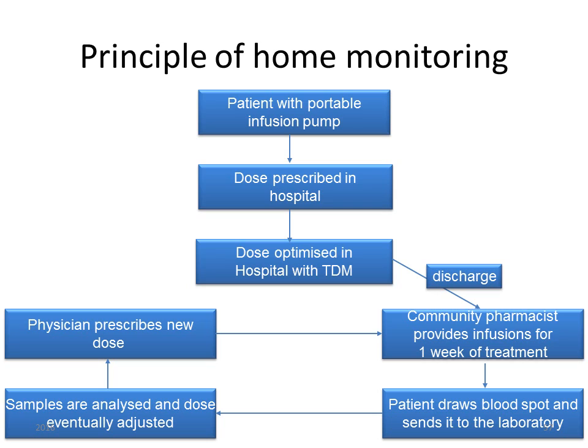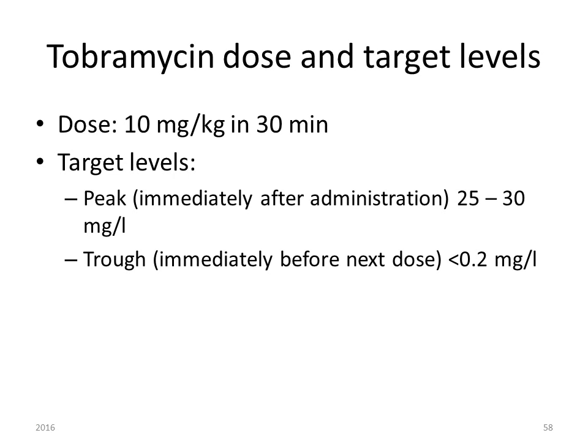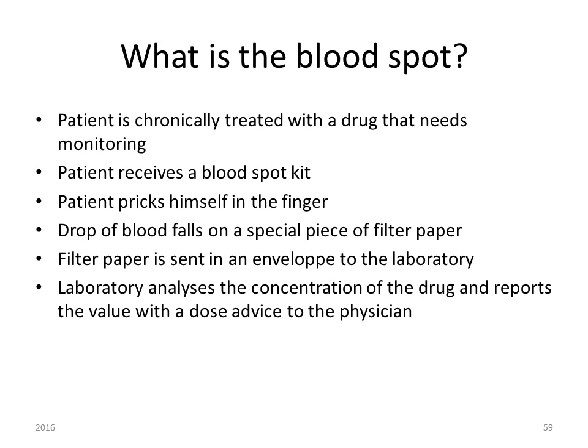What kind of blood samples can a patient draw themselves and send to the laboratory? It's not a normal venipuncture — we use dry blood spots. The tobramycin dose and target levels in cystic fibrosis are rather high: the dose is 10 mg per kg body weight, the target peak level immediately after administration is 25 to 30 mg per liter, and the trough level immediately before the next dose should be less than 0.2 mg per liter. Because of these strict targets, close monitoring using a blood spot kit is required.